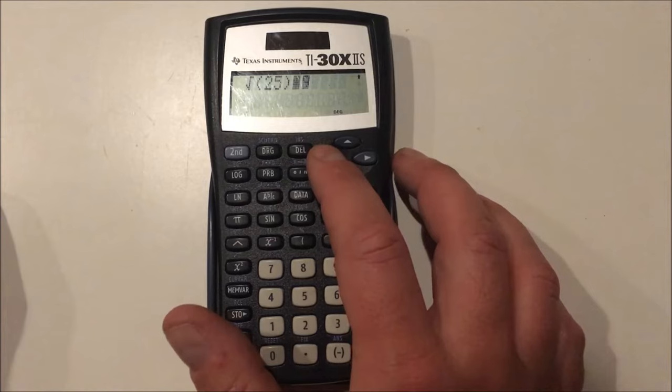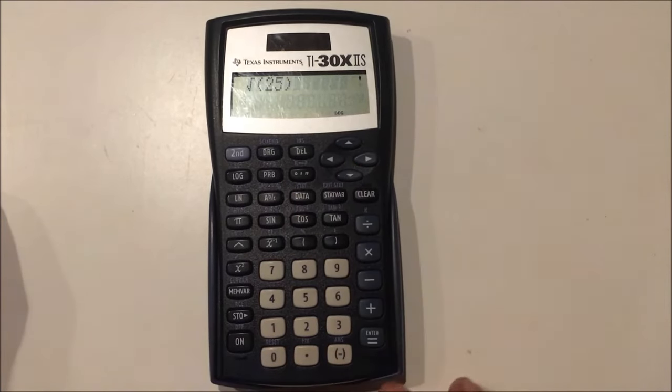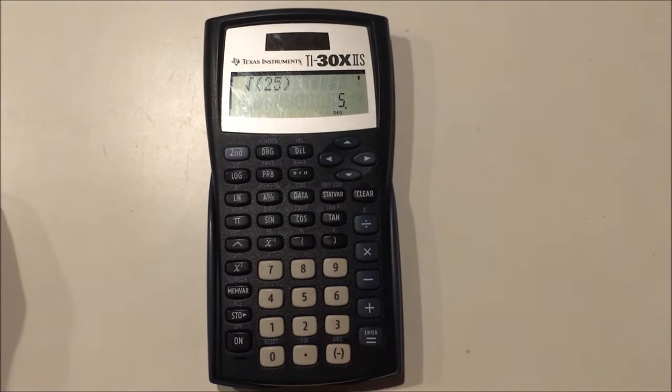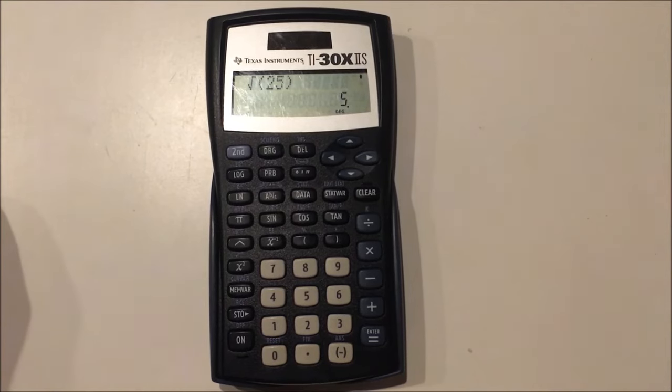I recommend you get used to closing open parenthesis because you find sometimes that you need to add more things afterwards. In this case, we're not going to do that. We're just going to press enter on the square root of 25. You can see that it is 5.